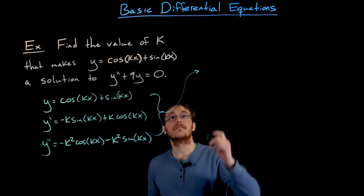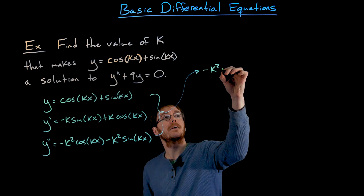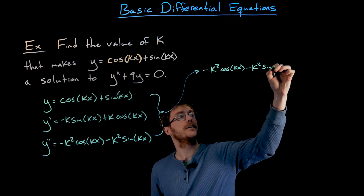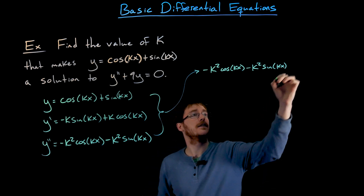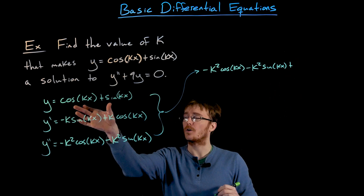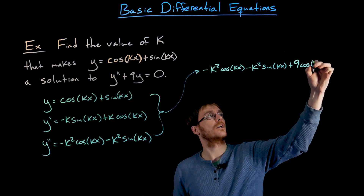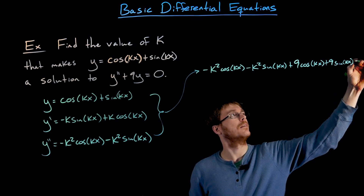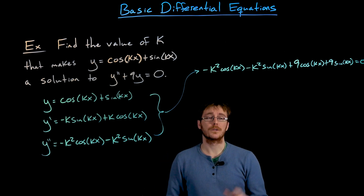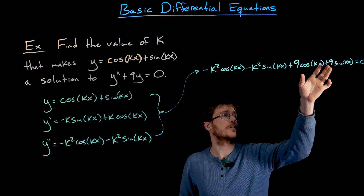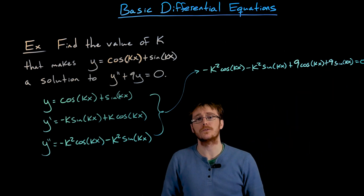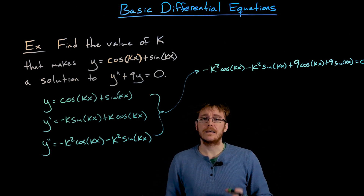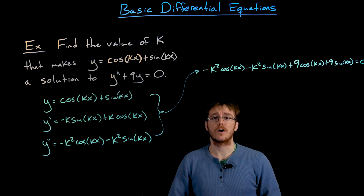What does y double prime look like? It's negative k squared cosine of kx minus k squared times sine of kx. Then we add to this nine copies of our original function y, so that gives us nine copies of cosine of kx plus nine copies of sine of kx. If this is a solution to our differential equation, then all this on the left-hand side is going to have to zero out and equal zero. So we have to find the values of k that zero out all these terms.